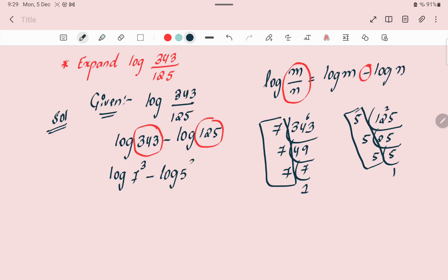Now take this 3 before log: 3 log 7 minus 3 log 5. Now 3 will be common, so 3 times (log 7 minus log 5). This is your final answer.